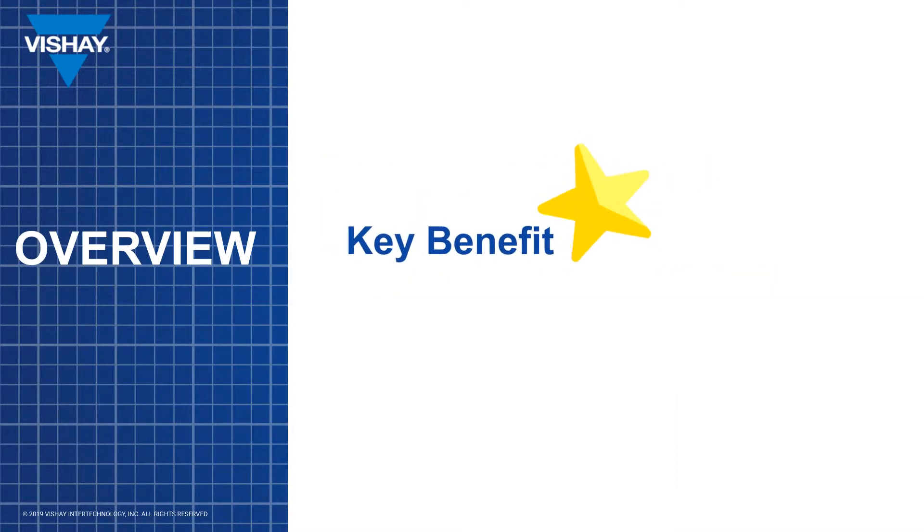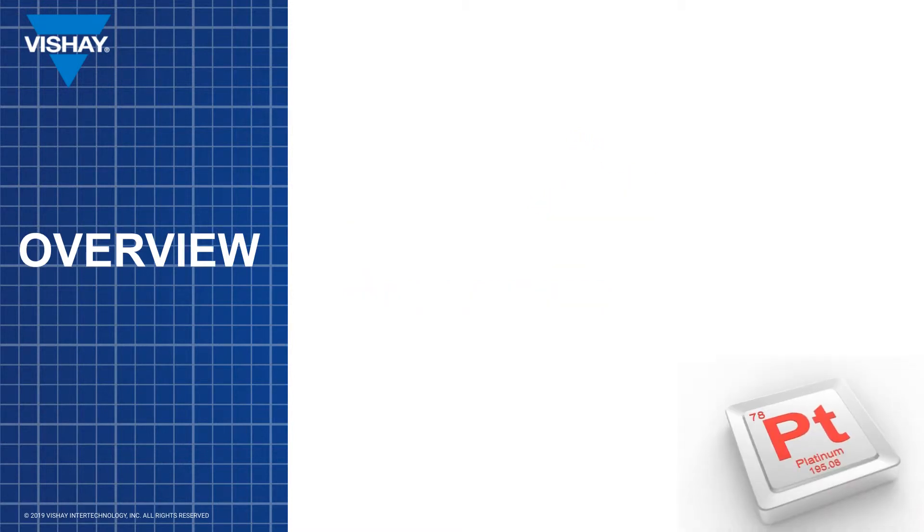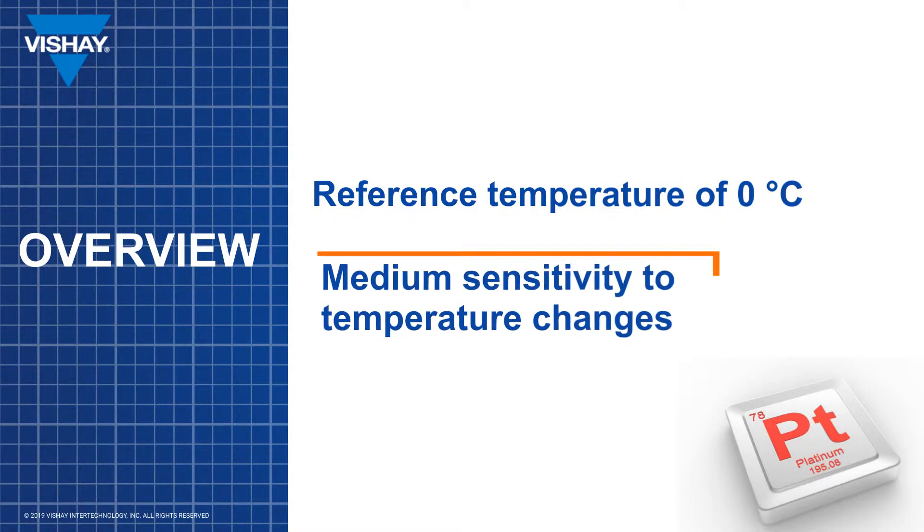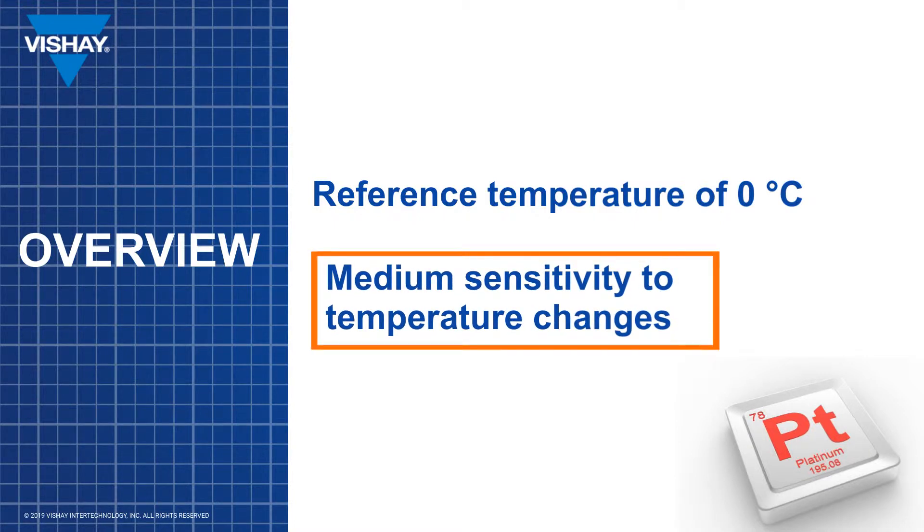The very thin film of platinum has another key benefit, as a low thermal mass makes the response time faster and potential packaging in a small assembly therefore much easier. As with other RTDs, the PTS-AT is classified using a reference temperature of zero degrees C. It must be noted however that even though the PTS-AT is highly accurate, its sensitivity to temperature change is moderate.